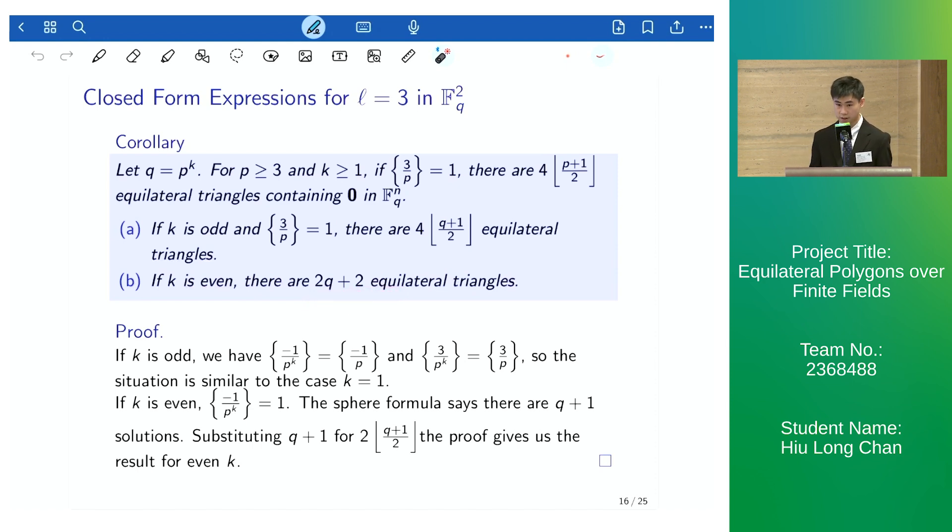If k is odd, then the proof is just similar to the proof before. But if k is even, we have the square root of minus 1 being existent in these finite fields.